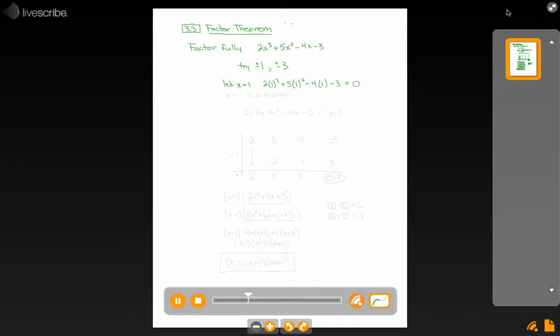By remainder theorem, that tells me that the remainder is zero. By factor theorem, that tells me that it is a factor. So x minus 1 is a factor.